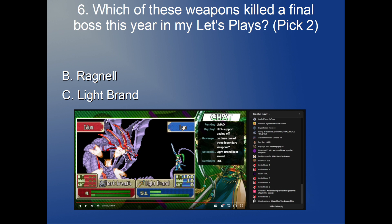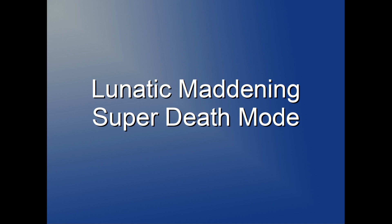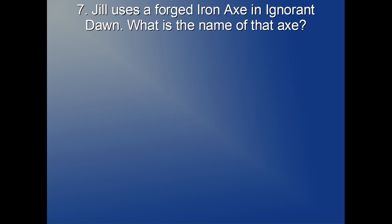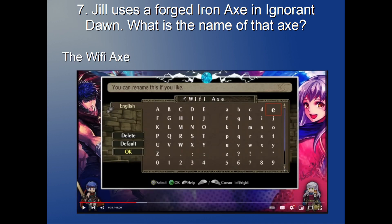Let's get into lunatic maddening super death mode. These questions — if you know the answers, you've definitely spent a lot of time on my channel and I'm grateful for that. Very obscure question: Jill uses a forged iron axe in Ignorant Dawn — what is the name of that axe? It has a name, that forge. It's a bit of a trick question, but you're in super death mode so you should be able to handle it.